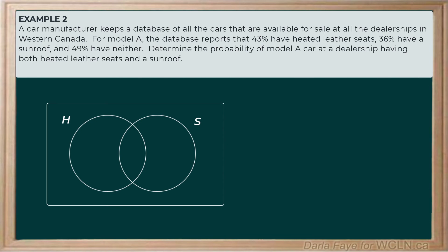From the question, there's a 43% chance of a car having heated leather seats, so the probability of event H is 43 out of 100. There's a 36% chance that a car will have a sunroof, so the probability of event S is 36 out of 100. And the probability that it has neither is 49%, or 49 favorable outcomes out of 100.